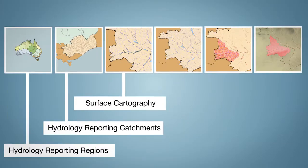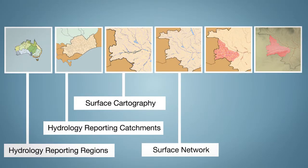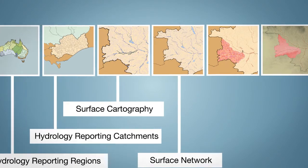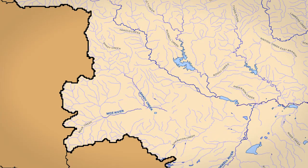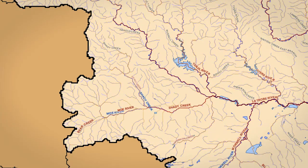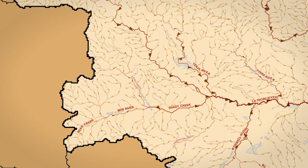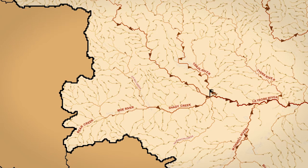This is achieved in combination with the surface network, which links stream flows that can connect when there are high water flows. Visualising these full networks helps with stream flow forecasting.